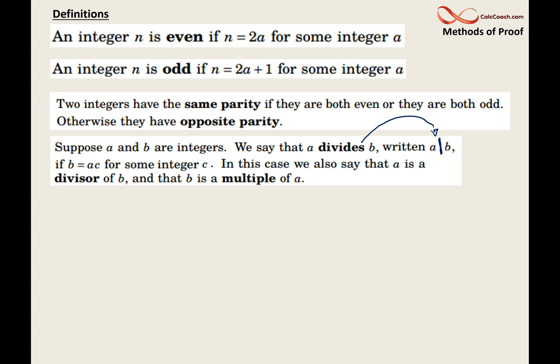For example, 5 divides 70. And the definition of that means that the number that's on the right-hand side, b, or the 70 in our example, can be written as a times some other integer c. 70 can be written as 5 times some other integer. That other integer for us is 14.